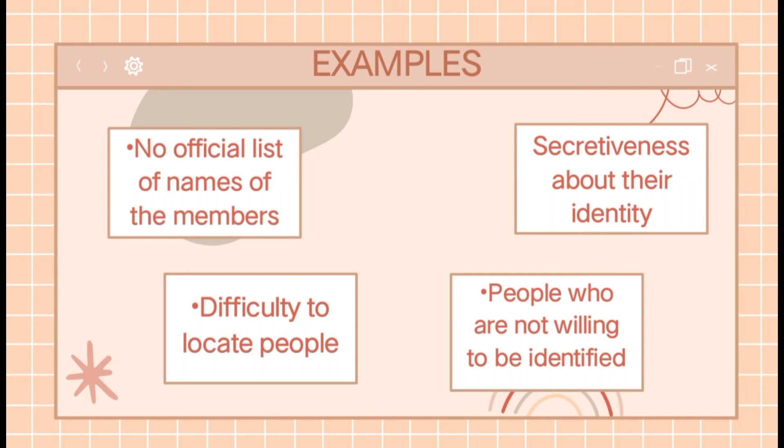People who belong to a cult, or are religious extremists or hackers, usually fall under this category. A researcher will have to use Snowball Sampling to identify these individuals and extract information from them.